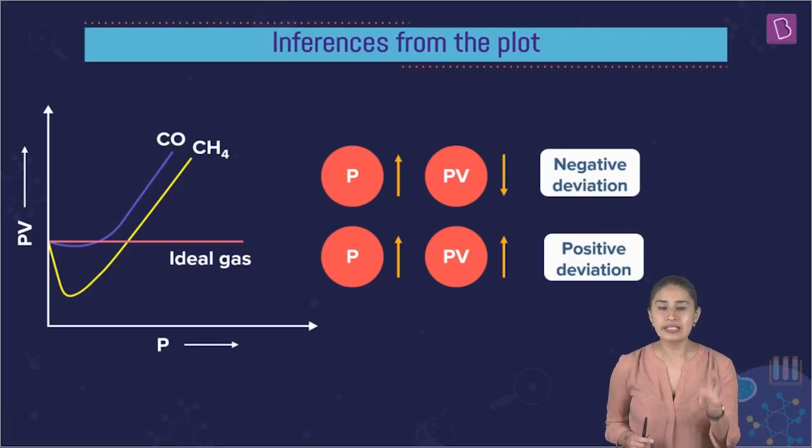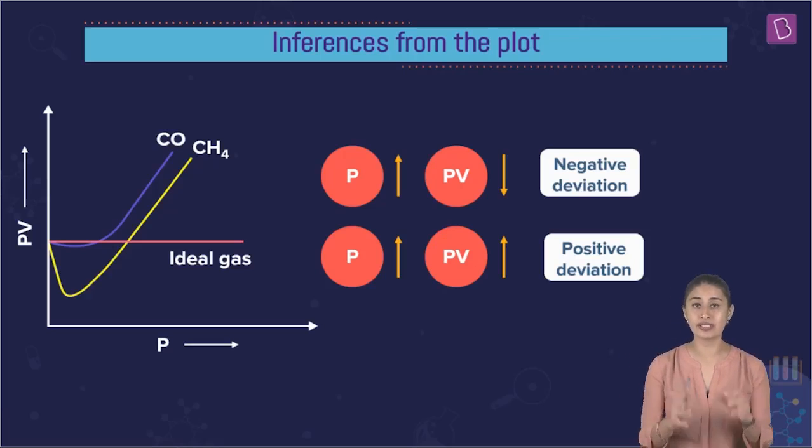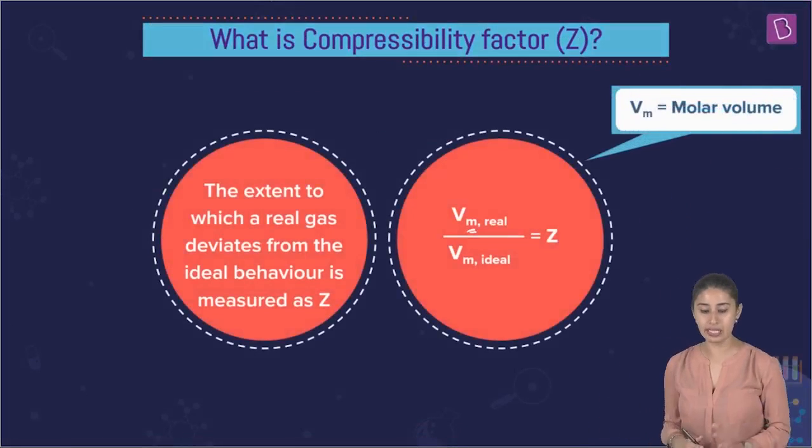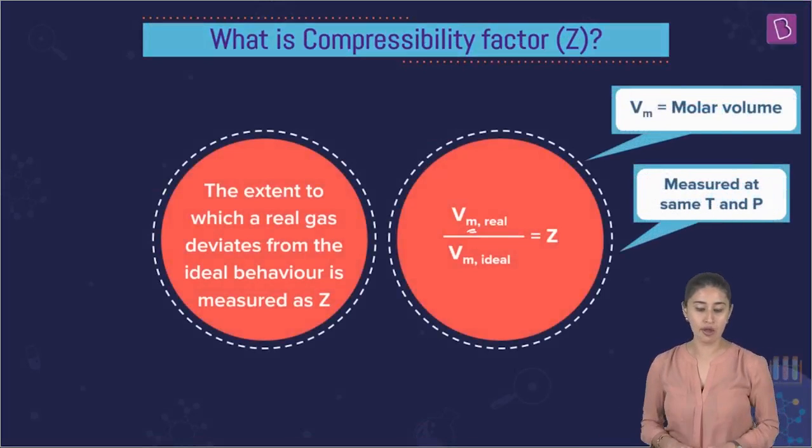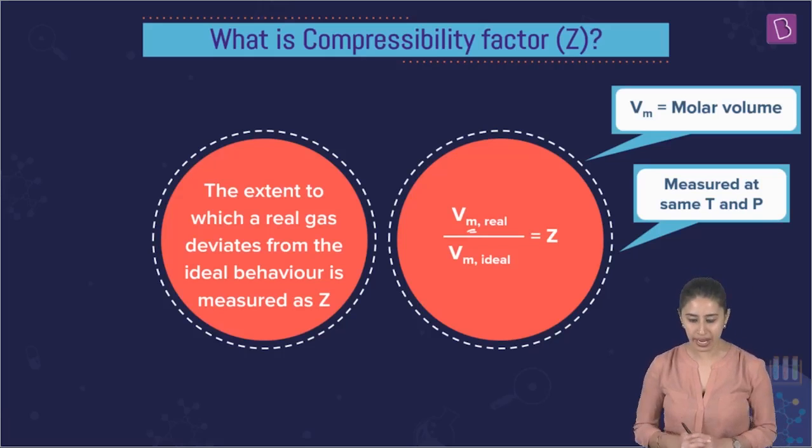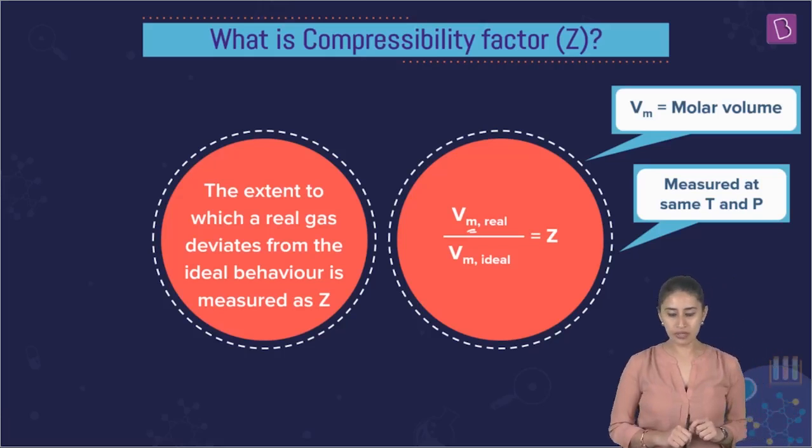Now, we need to understand Z, which is compressibility factor, which helps us in understanding the deviation. So what is this compressibility factor? It is nothing but the extent to which a real gas deviates from the ideal behavior. It tells about the extent of the deviation, deviation between the ideal gas and real gas behavior.